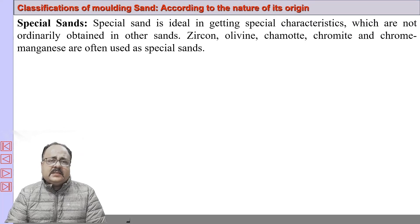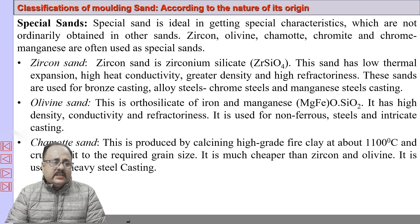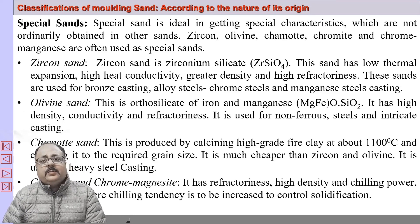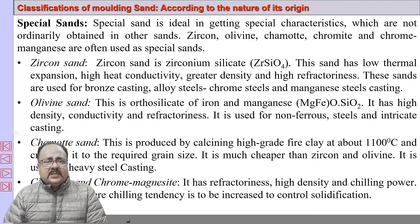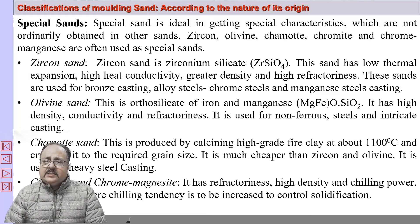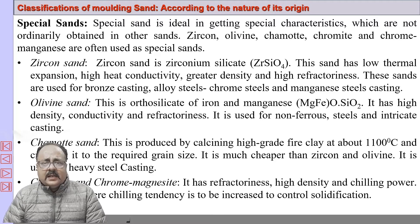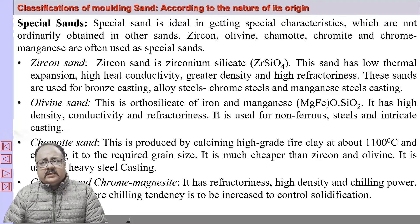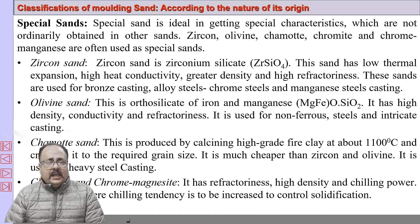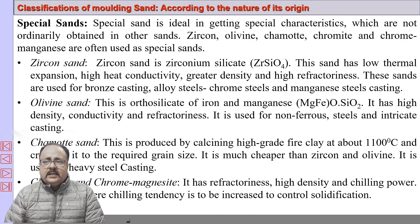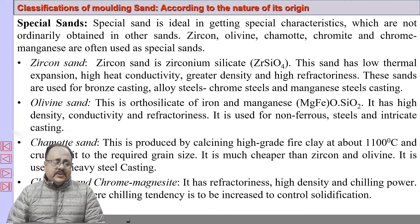We also have certain special sands, which are synthetic sands for special applications. Zircon sand is zirconium silicate with low thermal expansion, high heat conductivity, greater density, and high refractoriness — used for bronze casting, alloy steel, chrome steel, and manganese steel. Olivine sand is an orthosilicate of iron and manganese with high density, conductivity, and refractoriness; it is used for casting non-ferrous steel and intricate castings.